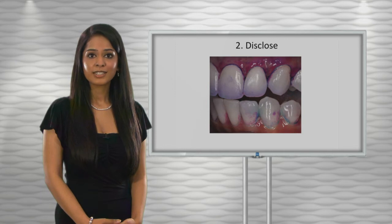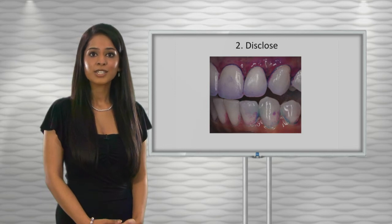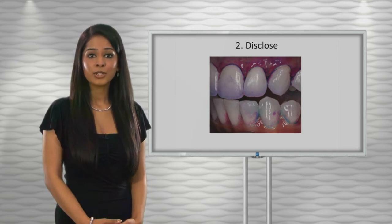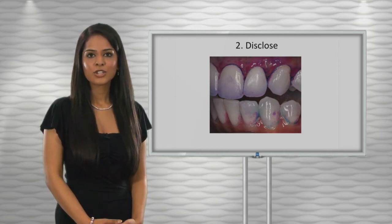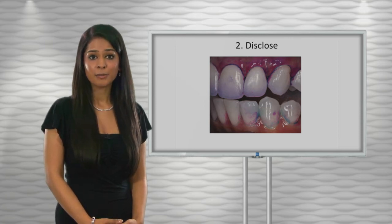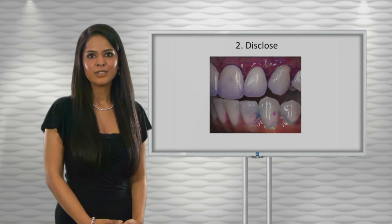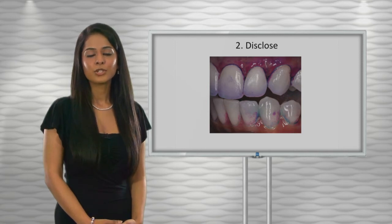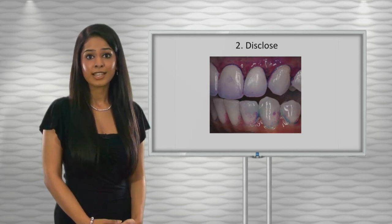Alternatively, a plaque disclosing solution can be used, which the dentist applies. Show the stained plaque to the patient with a hand mirror, indicating the areas they have missed. If you're really keen, you can even record a plaque score which you can then reassess again later.